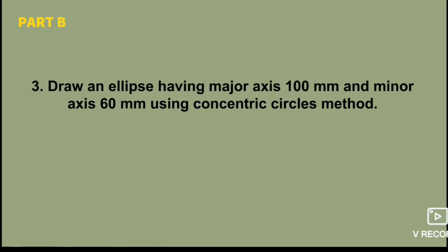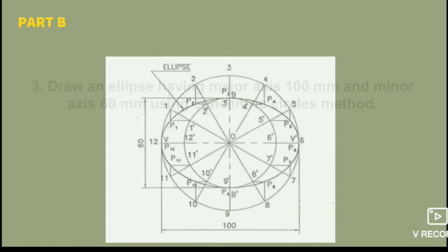Draw an ellipse having a major axis of some mm and minor axis 60mm using the concentric circles method. If you want to use the concentric circles method in text, check the instructions. You can use a square of 13 or something similar.